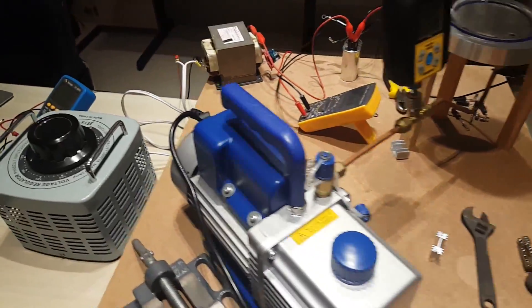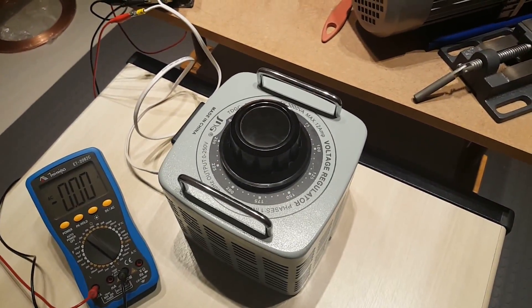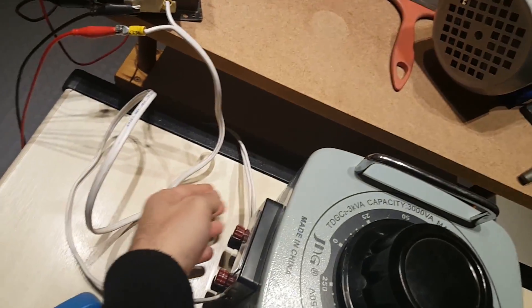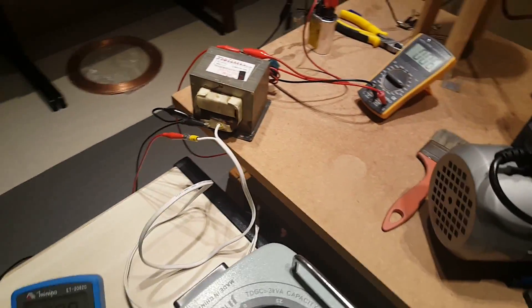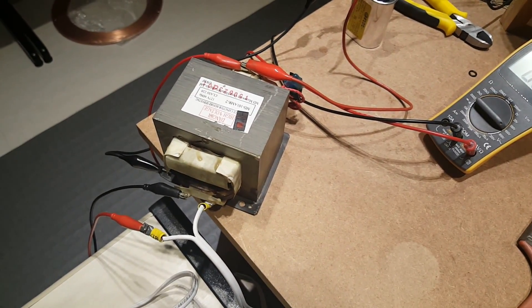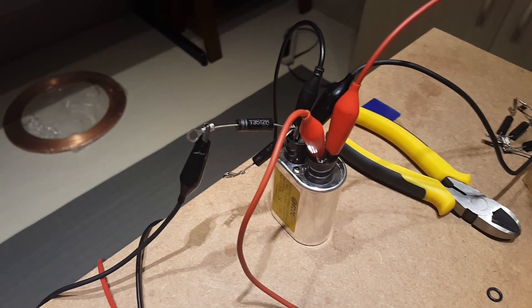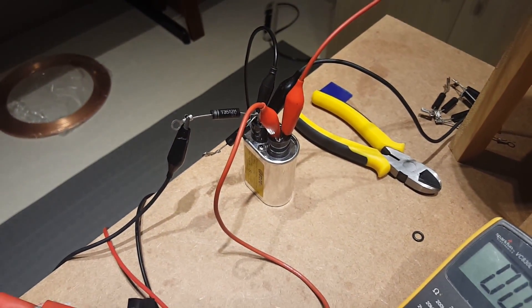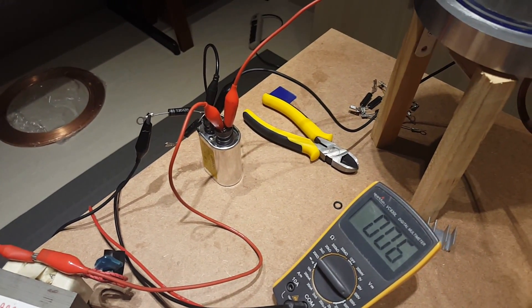And the circuit is like this. I have this variac so the mains come in here, the input, and then the output to a microwave oven transformer, a capacitor, and just a diode. I can improve this circuit but this is my first time so I made it very simple just to test it.